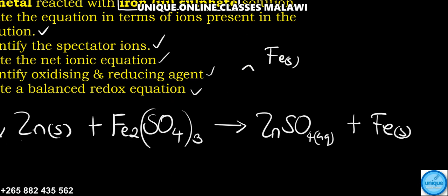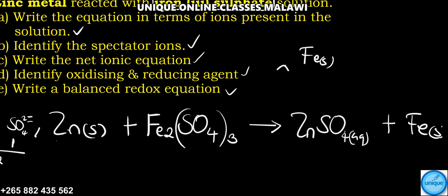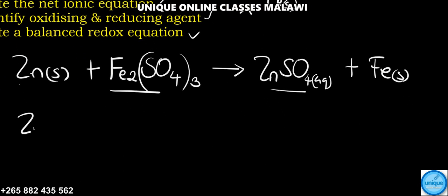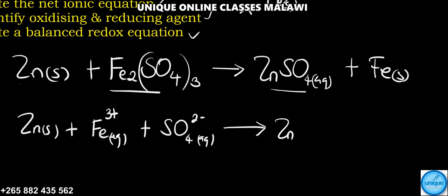Now we should write the equation in terms of ions present. So we need to break it down. We have zinc solid plus iron Fe³⁺ aqueous plus sulfate ion SO₄²⁻ aqueous. Here we're going to have zinc 2+ aqueous plus SO₄²⁻ aqueous plus iron solid.